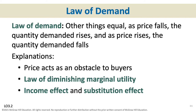The law of demand says, other things equal, as prices rise, people won't buy as much; if prices fall, people will buy more. That makes sense — don't you want to buy more when price goes down, and less when price goes up? Price is an obstacle to buyers, so we like that obstacle to be as low as possible. We want prices to be low.